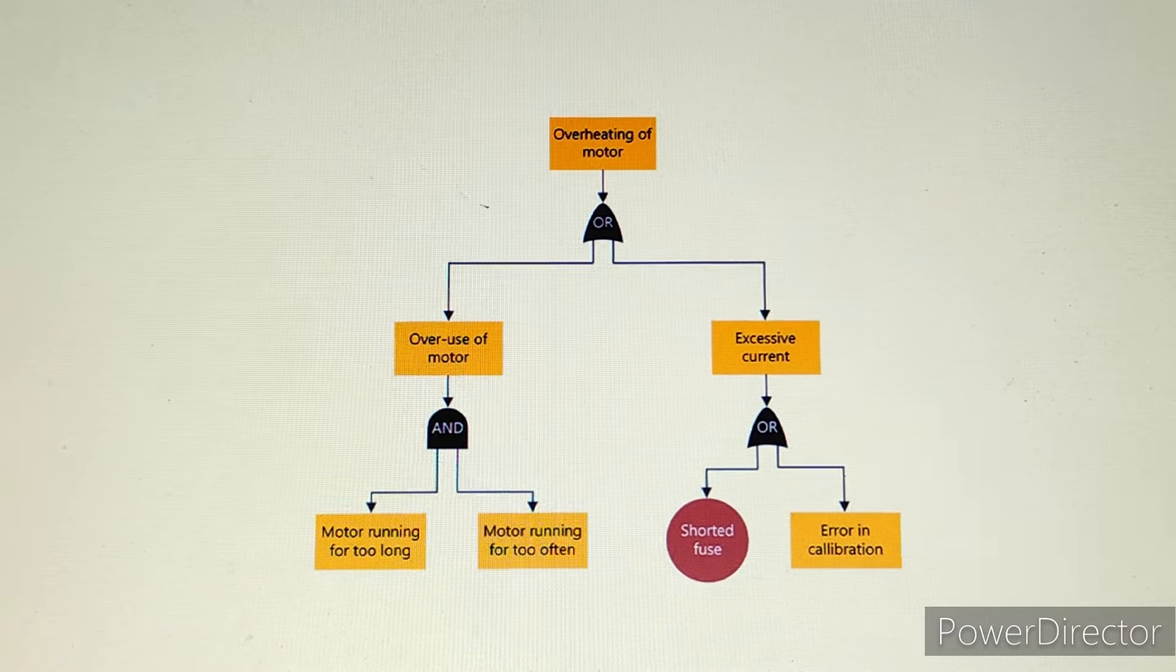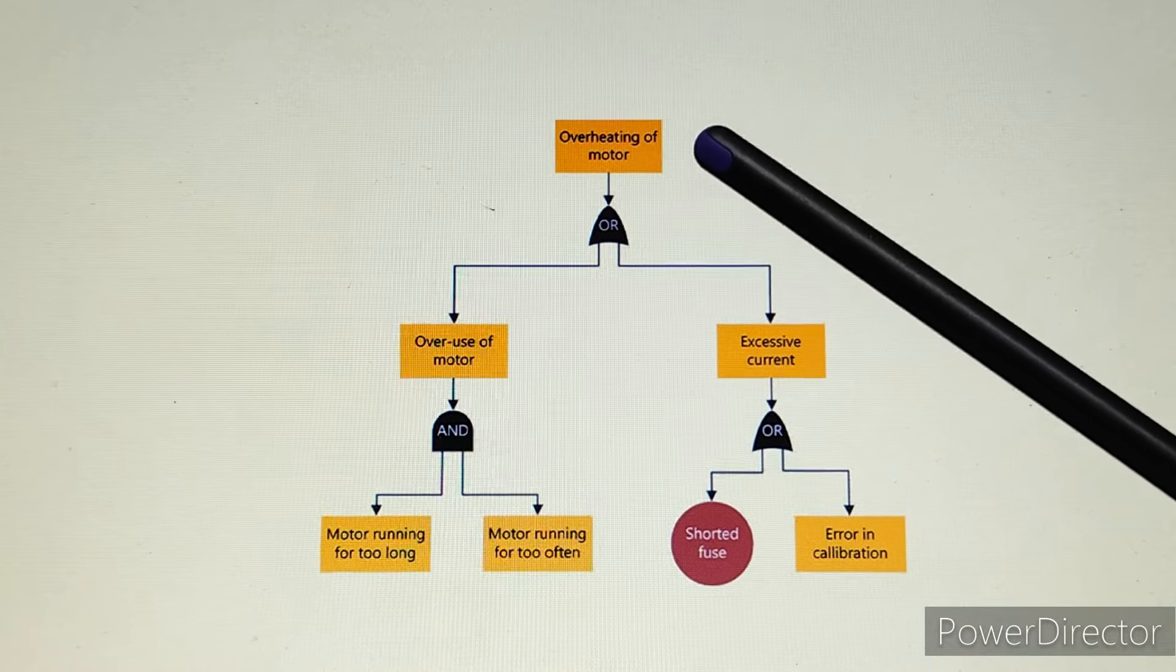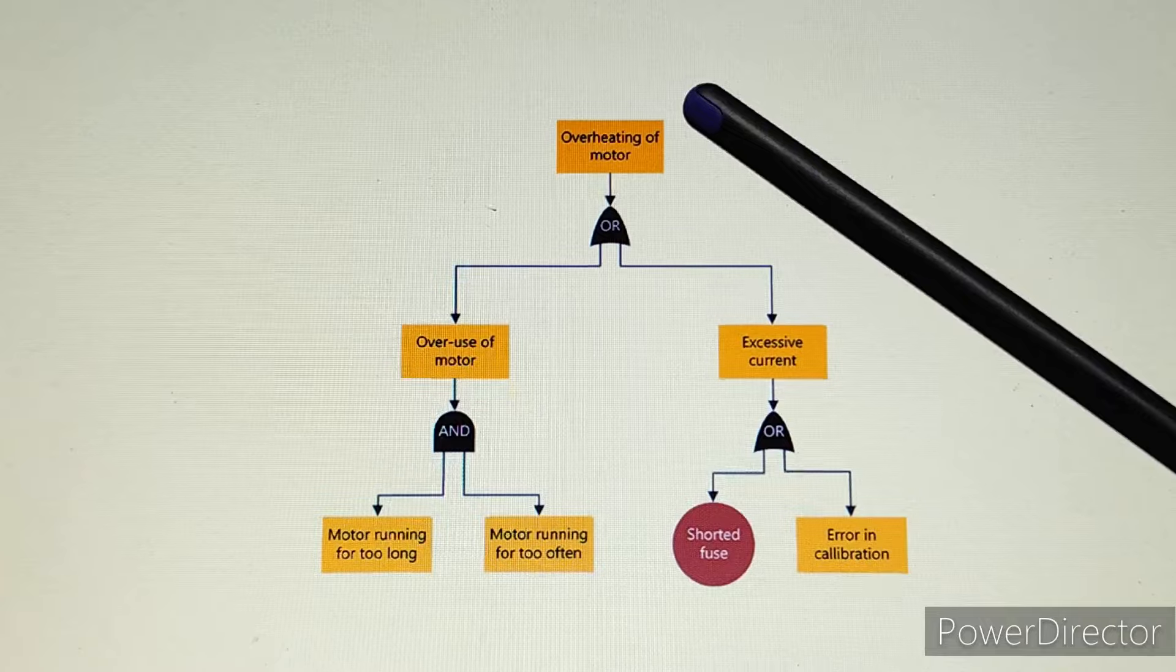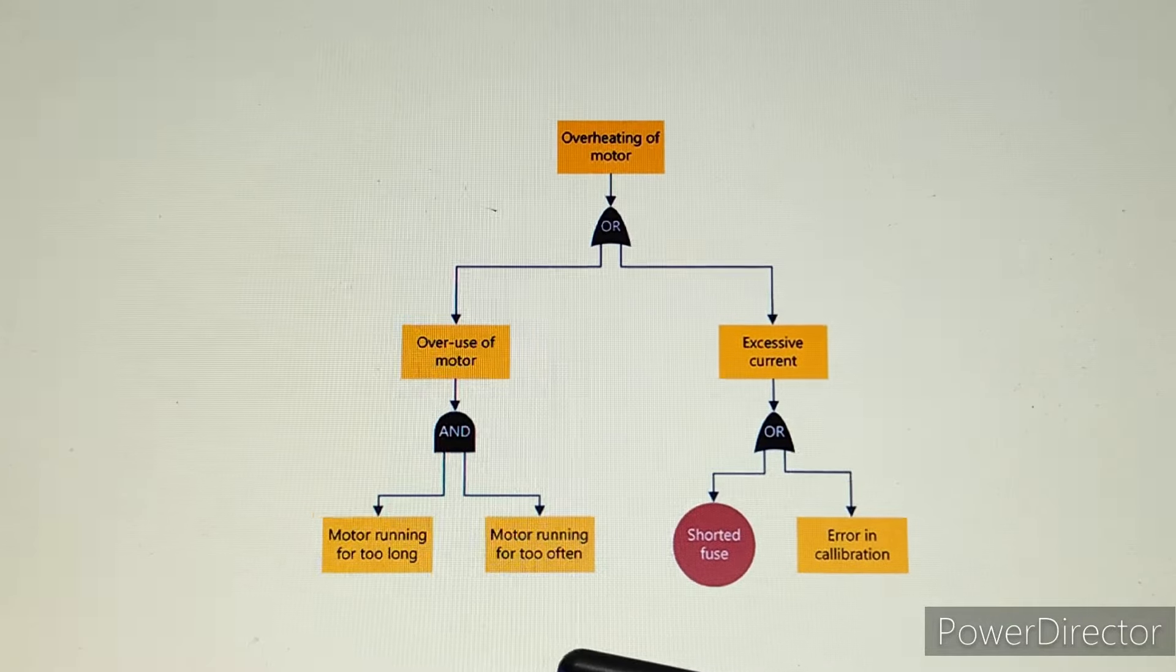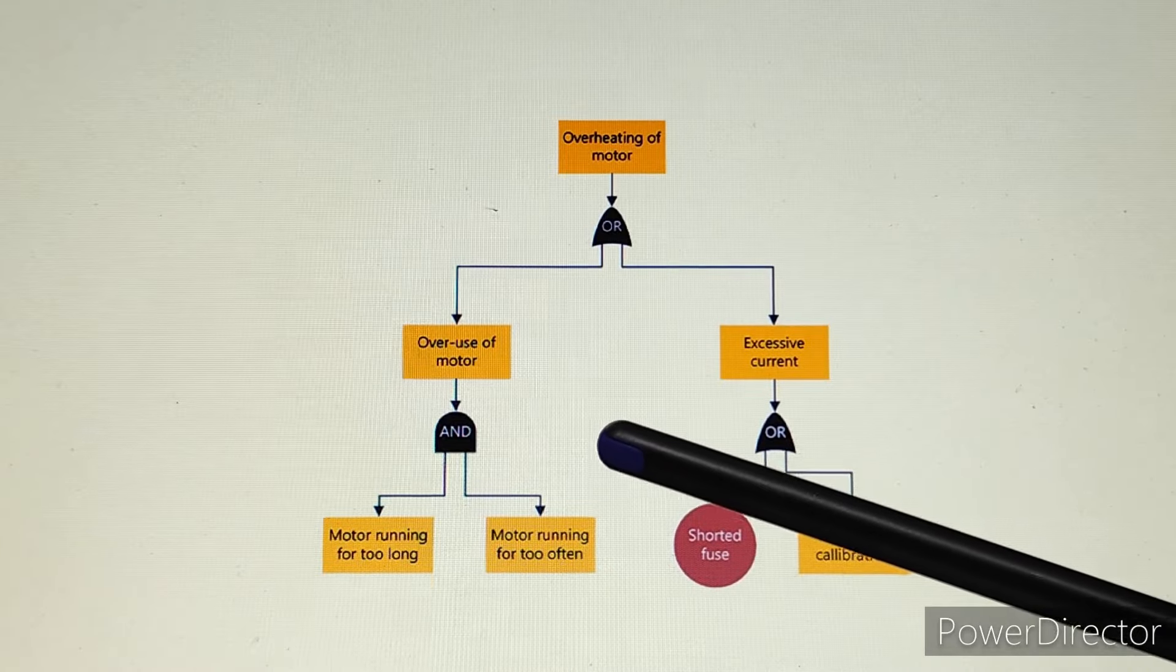We will understand an actual example through FTA. Our top undesired event is overheating of motor. We need to find it less probable, so we need to find the cause. When we find the cause, we need to find safety measures.